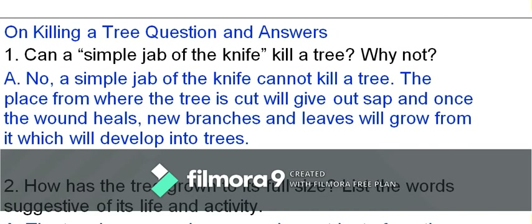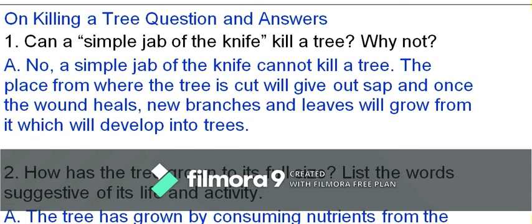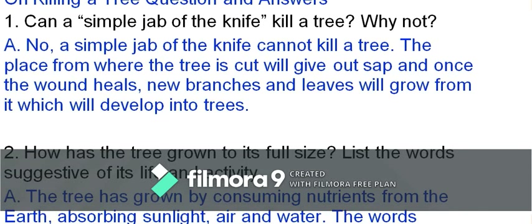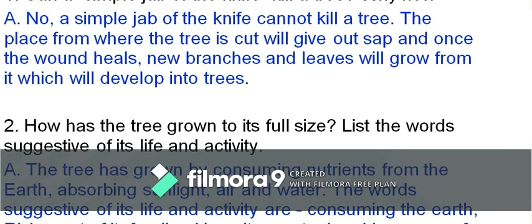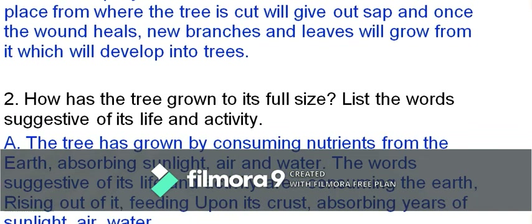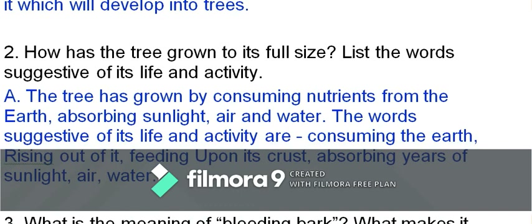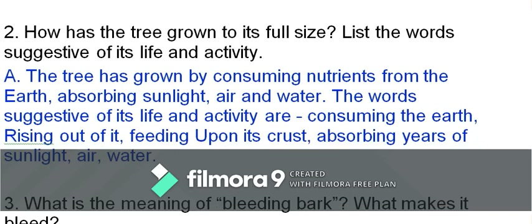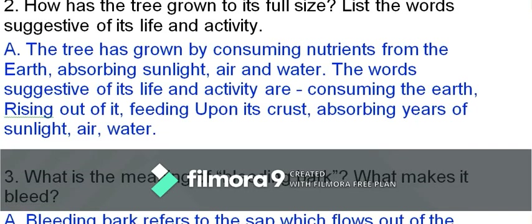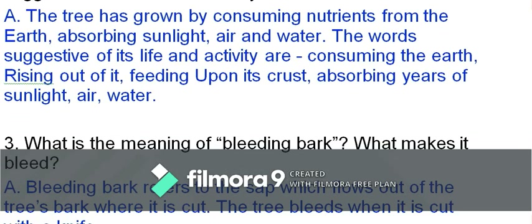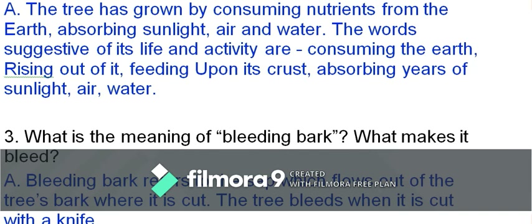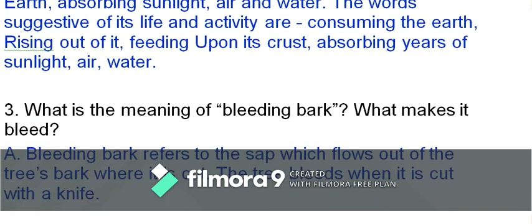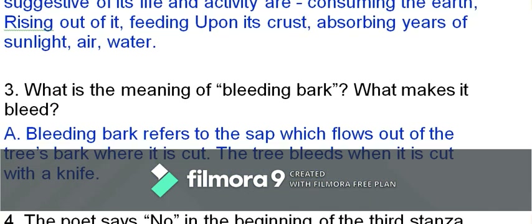Question: Can a simple jab of the knife kill a tree? Why or why not? Answer: No. The place where the tree is cut will give out sap, and once the wound heals, new branches and leaves will grow, which will develop into trees. Question: How has the tree grown to its full size? List words suggestive of its life and activity. Answer: The tree has grown by consuming nutrients from the earth and absorbing sunlight, air, and water.